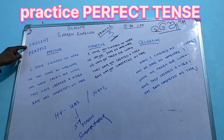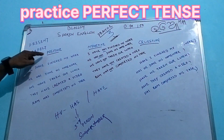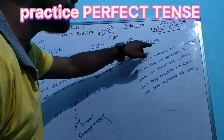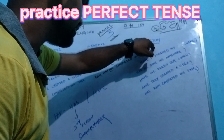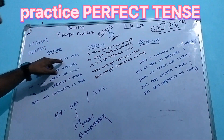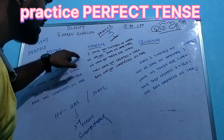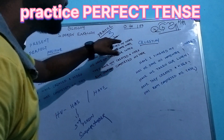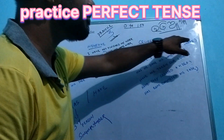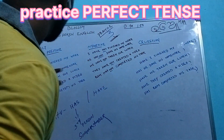Present perfect: Positive sentence, negative sentence, and question sentence. I have finished my work. I have not finished my work. Have I finished my work?